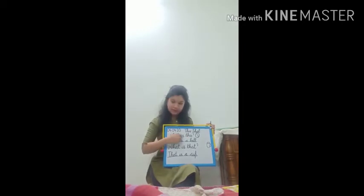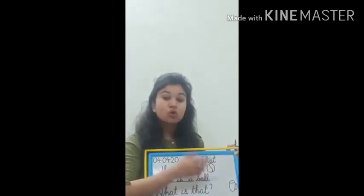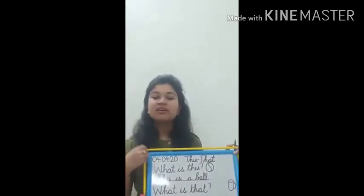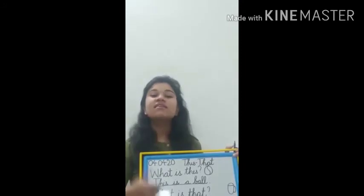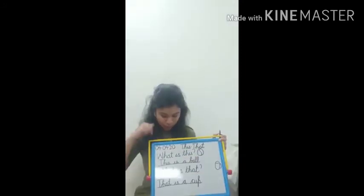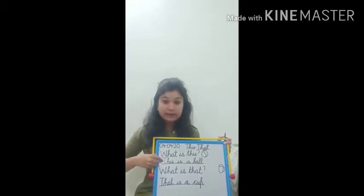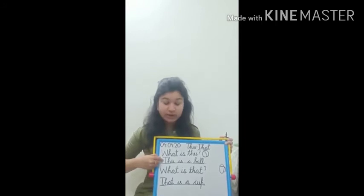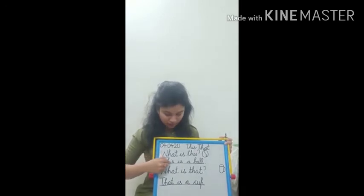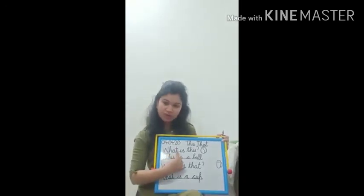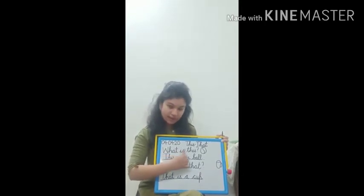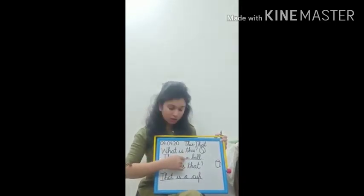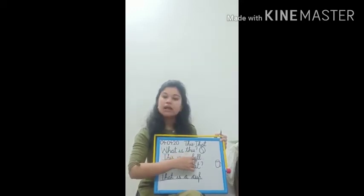Ho aapse pooch rahe hain. 'What is this?' Ab bol — toh paas mein hai, toh 'What is this?' ka jawab kya bologe? 'This is a...' bol. Now, how you will write? T — capital. First letter capital hota hai jab ham start karte hain likhna. T-H-I-S, 'This'. Then one finger gap. I-S, 'Is'. Then one finger gap. A. Then one finger gap. B-A-W-L-L — 'ball'. This is a ball.